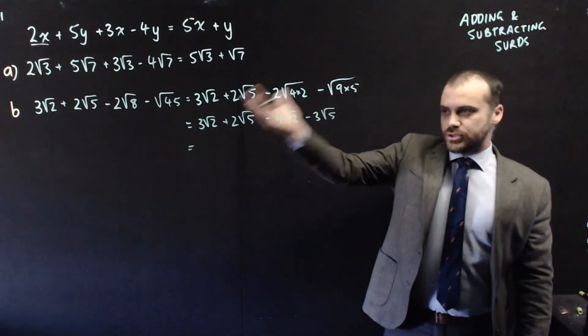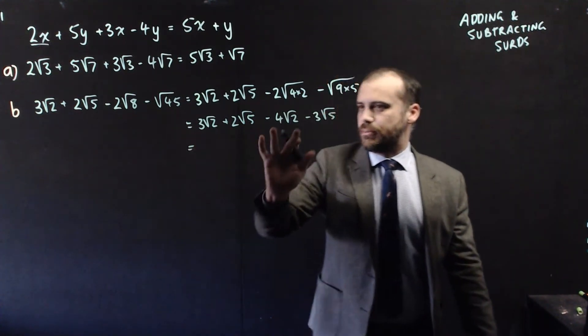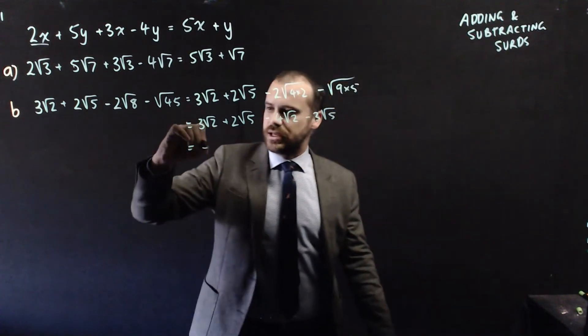And then we just group all of our like terms. 3 root 2 minus 4 root 2 is negative root 2. And 2 root 5 minus 3 root 5 is minus root 5.